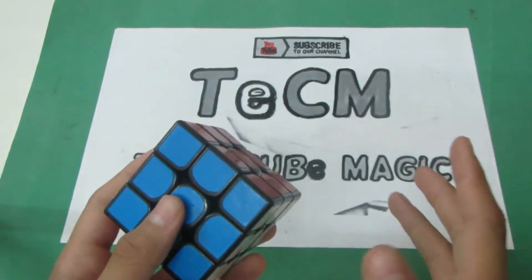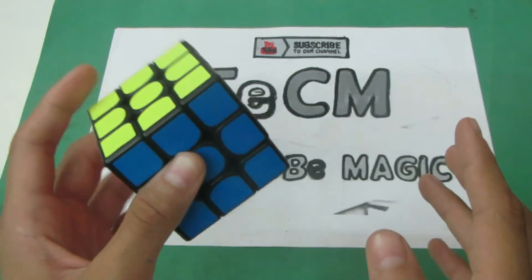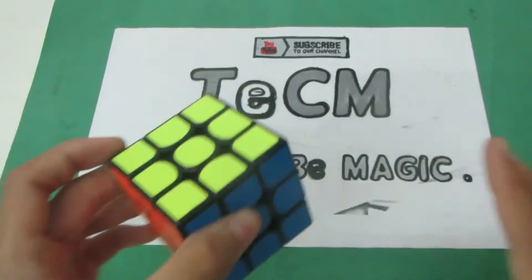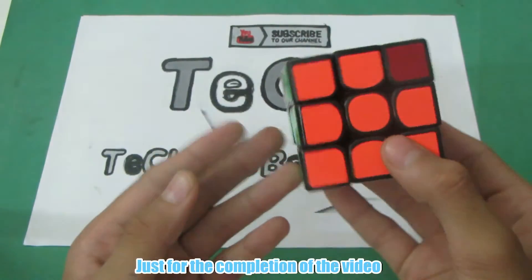Step one: find the headlights and get them on the back. Step two: recognize the case and do one of the six algorithms. Now it's time for an exception.